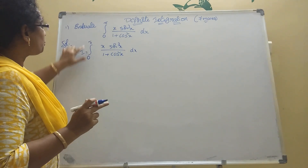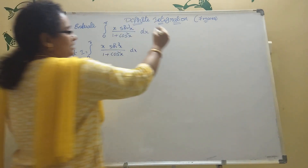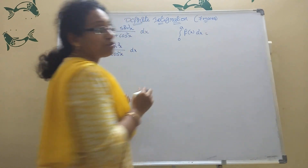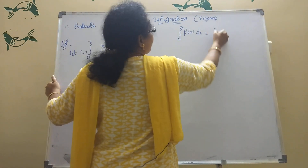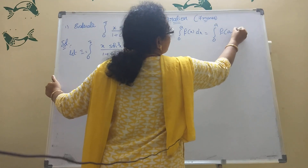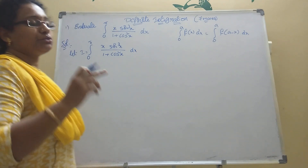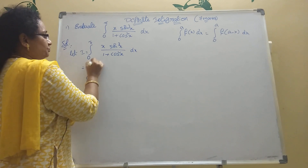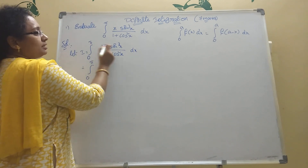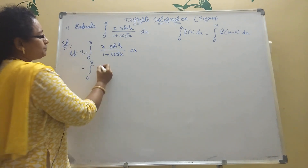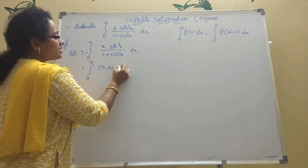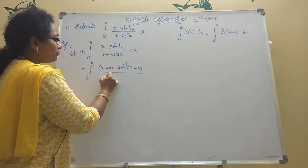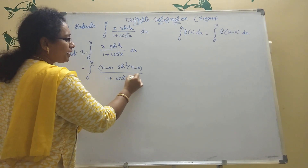One formula is there: integration of 0 to a of f(x) dx equals integration of 0 to a of f(a − x) dx. Whenever x is there, subtract from the upper limit. So here, x becomes π − x: we write π − x into sin³(π − x), divided by 1 + cos²(π − x).